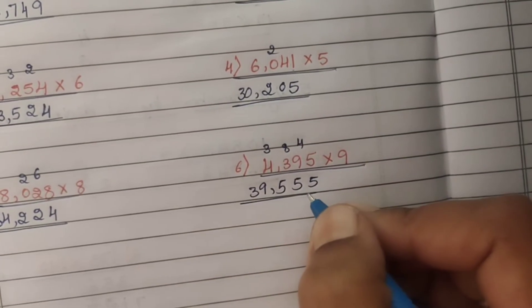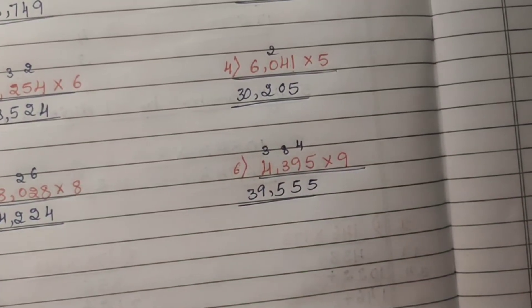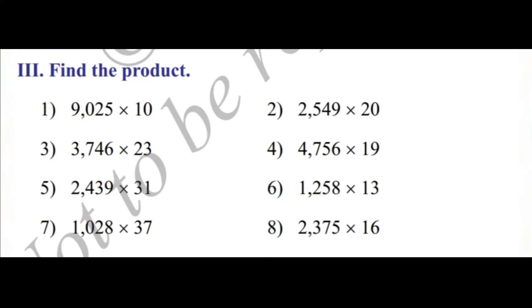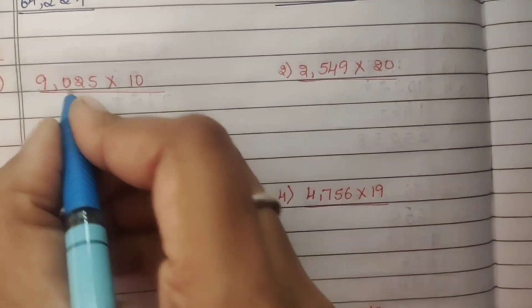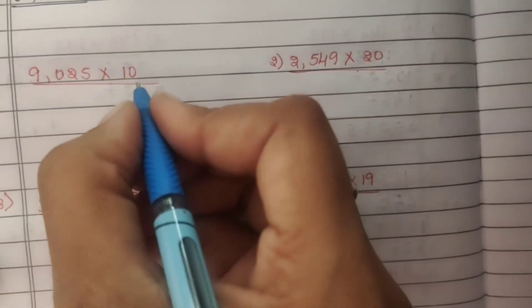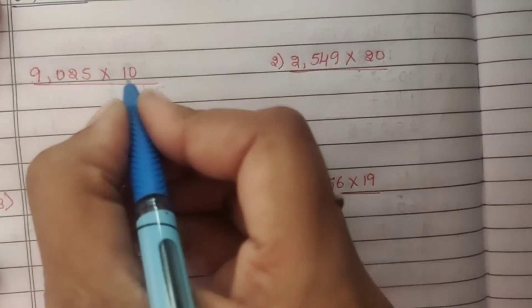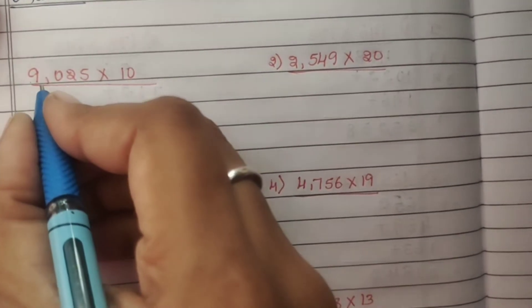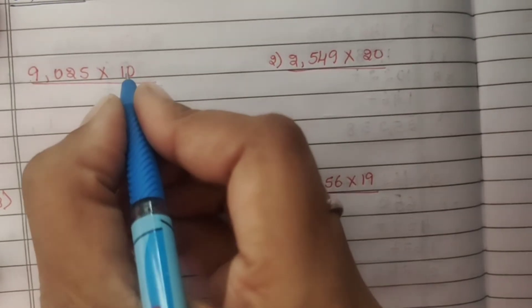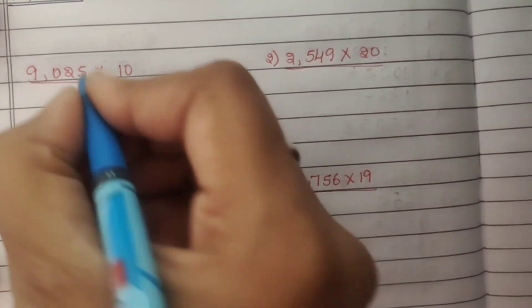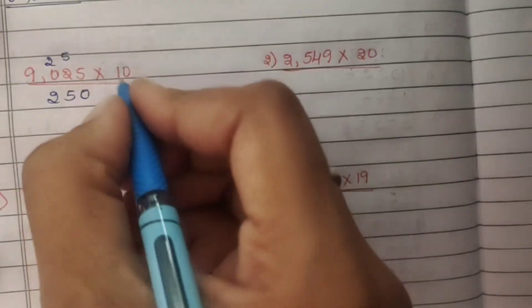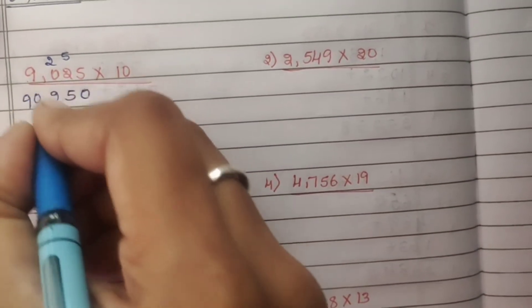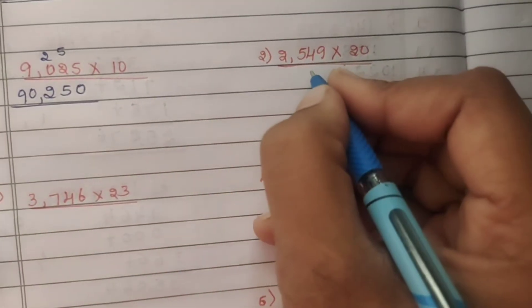Third Main: Find the product. First problem: 9,025 into 10. 10 fives are 50, carry 5. 10 twos are 20, 20 plus 5 is 25, carry 2. 10 zeros are 0, 0 plus 2 is 2. 10 nines are 90. Answer: 90,250.